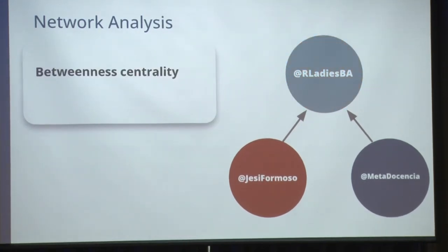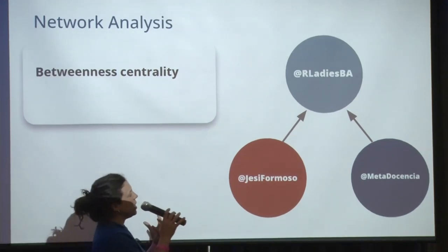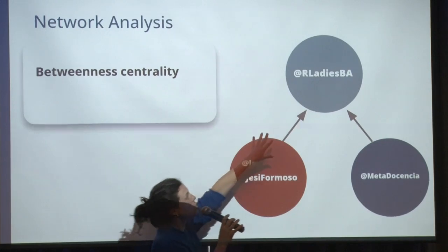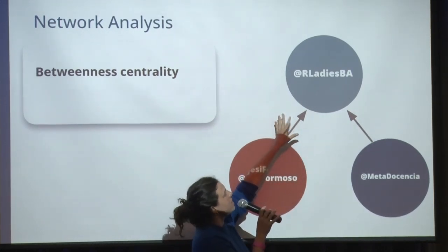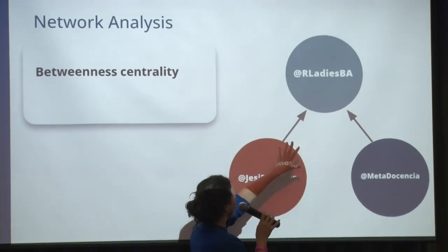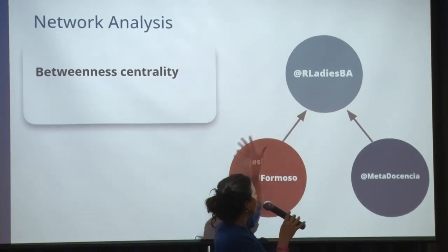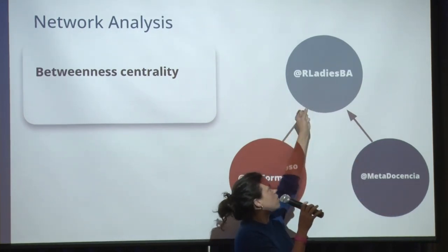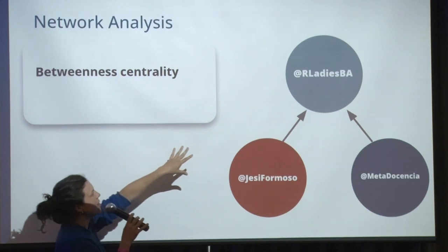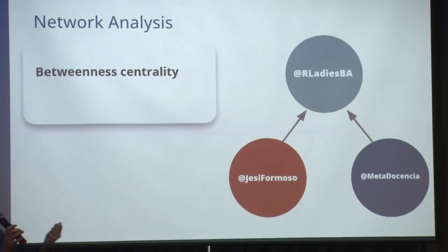A concept we want to clarify is the measure of betweenness centrality. This concept shows us the number of times a node is in the middle of a path between two other nodes — it works as a bridge. In this case, Our Lady's account would be a bridge between myself and MetaDocencia. If we remove that node, our connection dies, which makes that specific node important to the creation of the network.